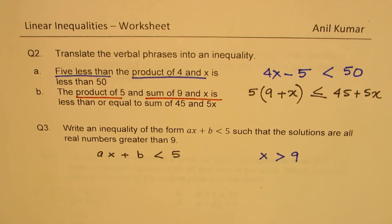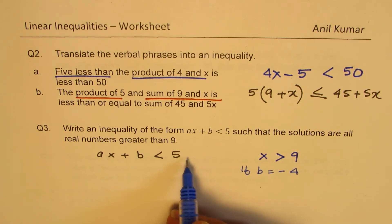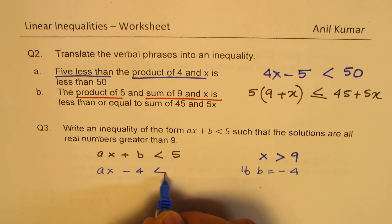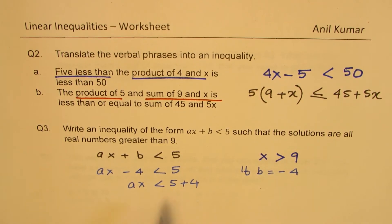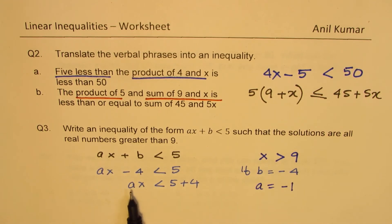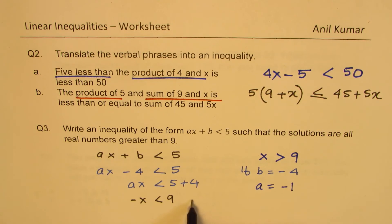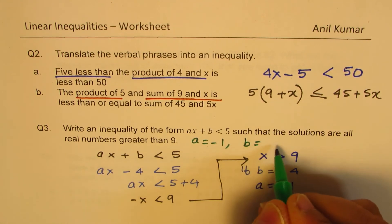Think about this using reverse calculations. If b equals minus 4, then bringing it across gives 9 on the right. So we write ax minus 4 less than 5, which gives ax less than 9. To get greater than from this, we let a equal minus 1. Then minus x is less than 9, which results in x is greater than 9 — exactly what we want. So a equals minus 1 and b equals minus 4.